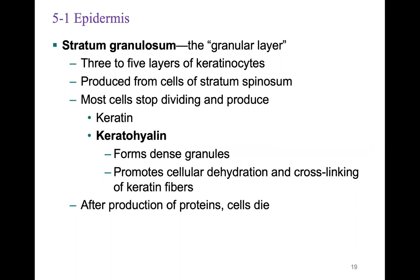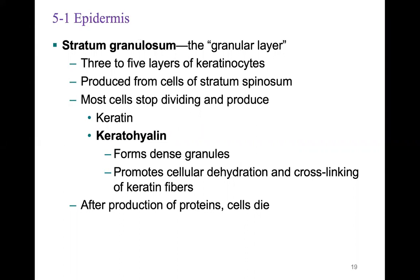The stratum granulosum is the granular layer, consisting of three to five layers of keratinocytes produced from cells of the stratum spinosum. Most cells stop dividing and begin to produce keratin. At this point, organelles and other cell processing functions are displaced as the cell fills with the protein keratin.